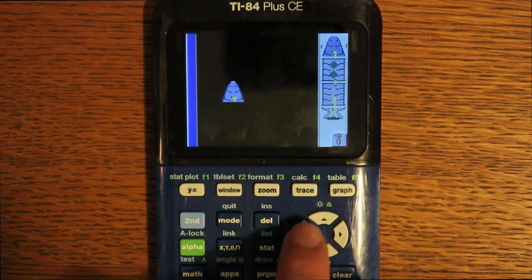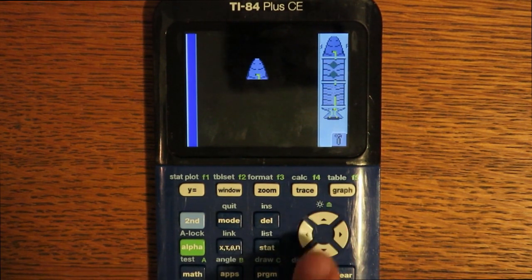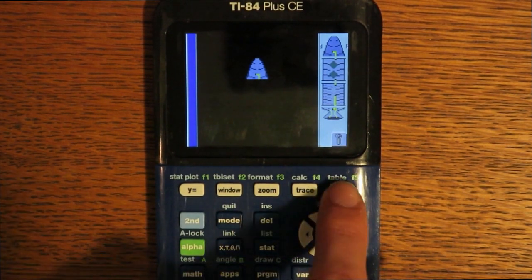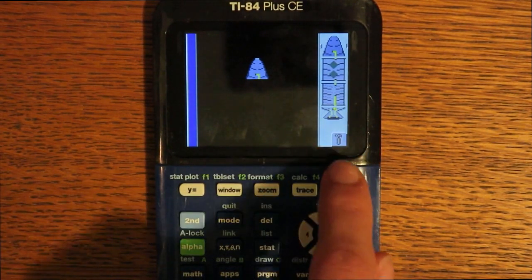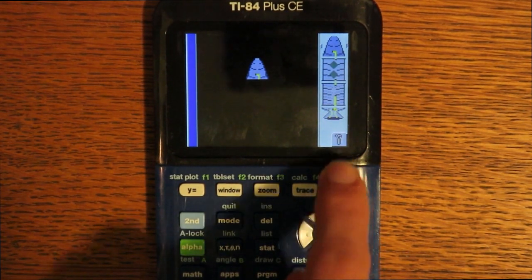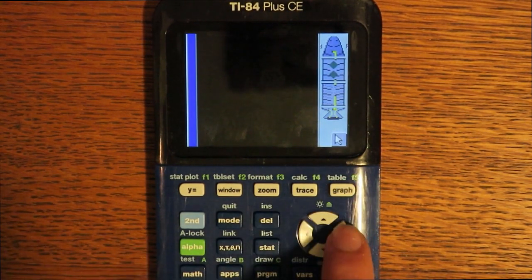From here, you can now use the arrow keys to move the part around. And when you finally have a good place you want to place it, press second. Now, you can tell you are in the build menu because there is a hammer there. To go back to selecting a part, you will want to click the hammer by pressing graph.